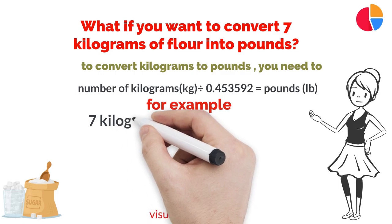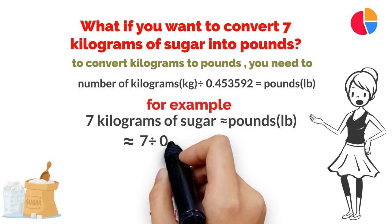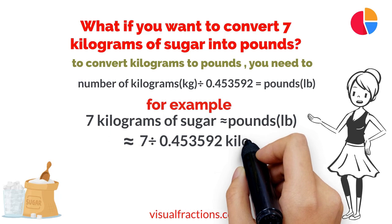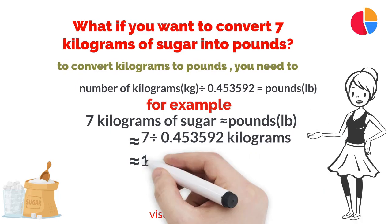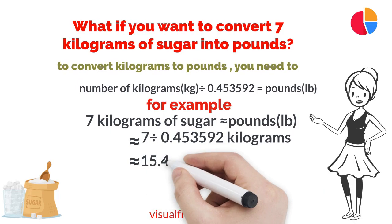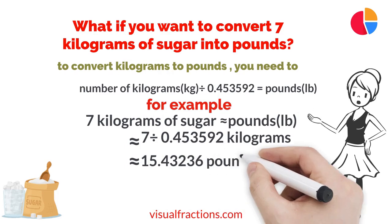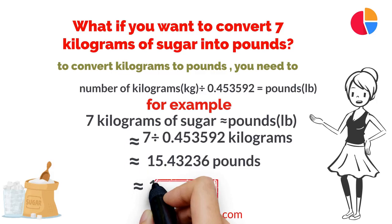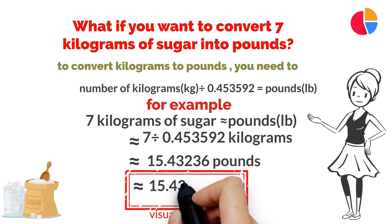Let's walk through an example of how to convert seven kilograms of sugar to pounds. We start by dividing seven by 0.453592. This gives us approximately 15.43236 pounds. Remember to round this number to the nearest hundredth.